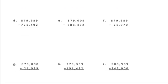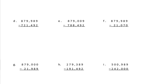D: 879,989 minus 721,492. 9 minus 2 is 7. 8 minus 9 — we need to borrow, so that becomes an 8. 18 minus 9 is 9. 8 minus 4 is 4. 9 minus 1 is 8. 7 minus 2 is 5. And 8 minus 7 is 1. Answer: 158,497.